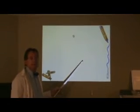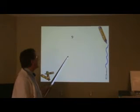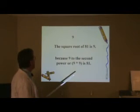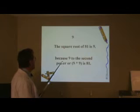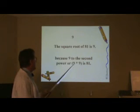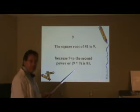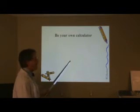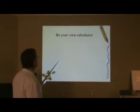Because nine times nine equals 81. The square root of 81 is nine. Because nine is the second power, or nine times nine is 81. You'll normally find a square root sign on most scientific calculators as well. Even on some very low-powered calculators, you'll find a square root bar.